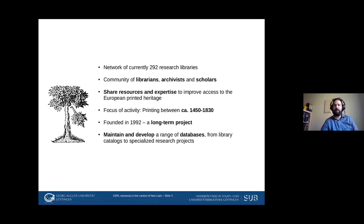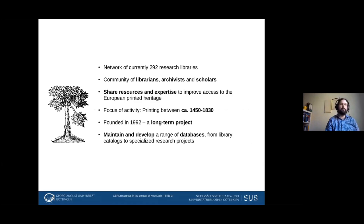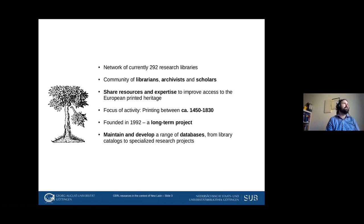CERL itself is a network of currently 292 research libraries, but beyond this institutional membership it's also a wider community of librarians, archivists, and scholars, mostly from the field of book history. The aim of the Consortium is to share resources and expertise with the broader aim of improving access to the European printed heritage. The focus is printing between roughly 1450 and 1830. The Consortium was founded in 1992, so it's really a long-term project running for about 30 years.